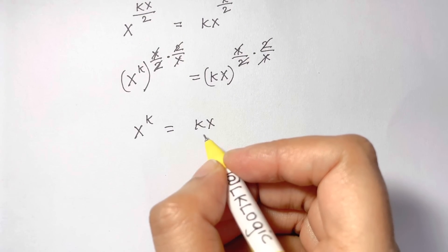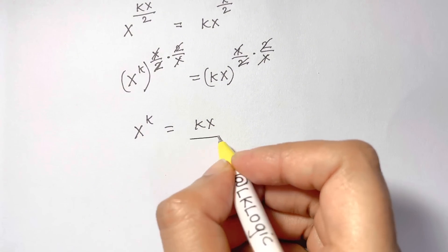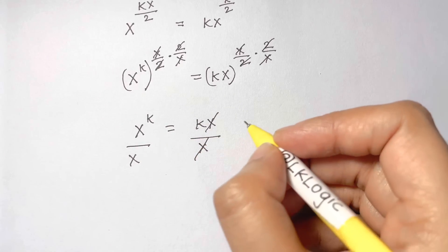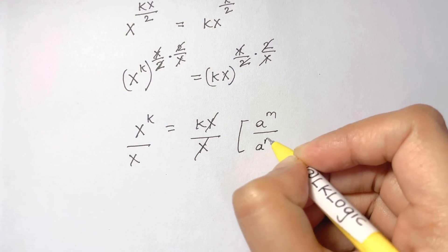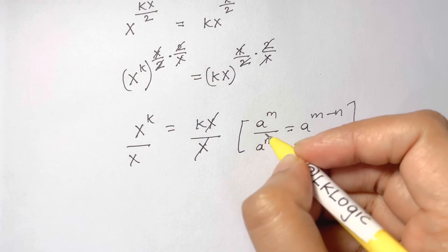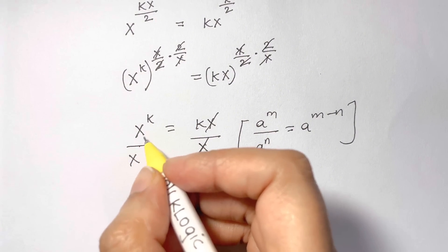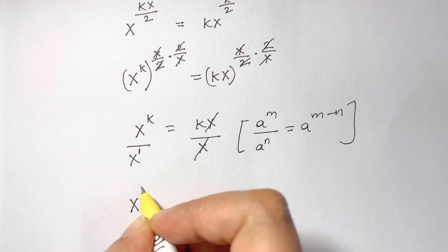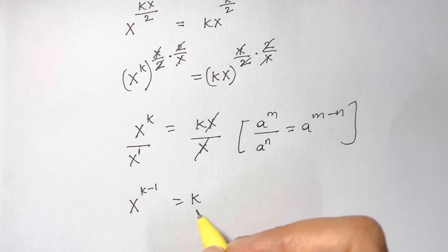Now we have an x on the right side. To find x in terms of k, we need to eliminate that x. Dividing both sides by x and applying the law a^m divided by a^n equals a^(m−n) — same base, division means subtract the powers — we get x to the power of k minus 1 equals k.